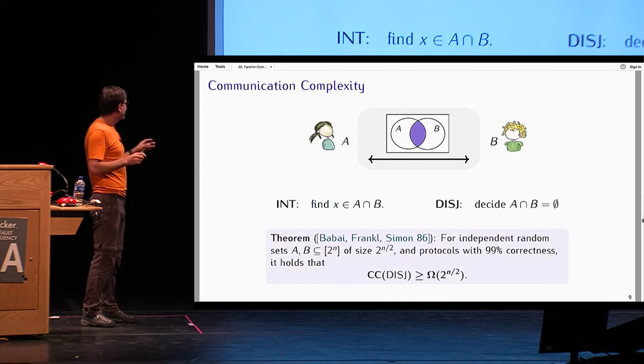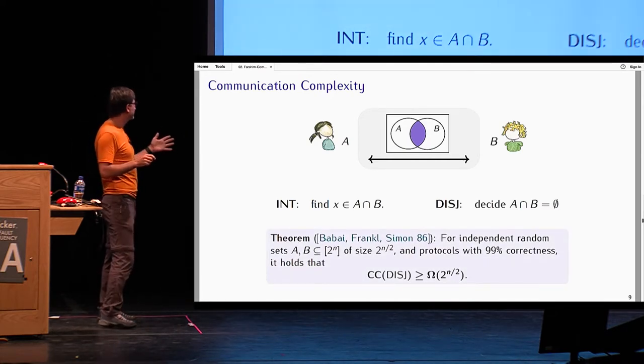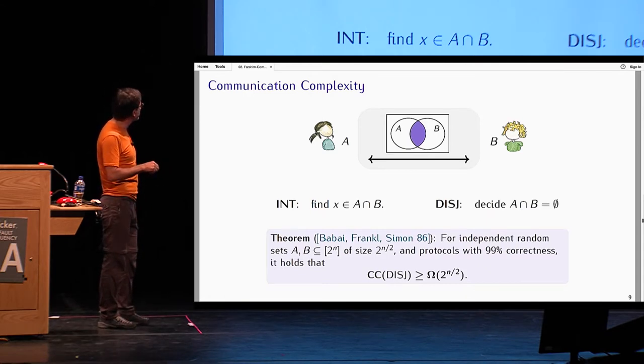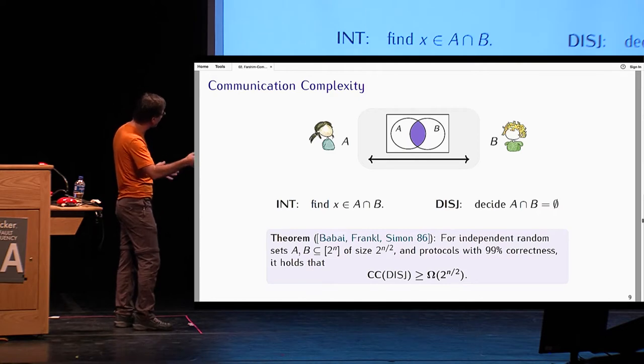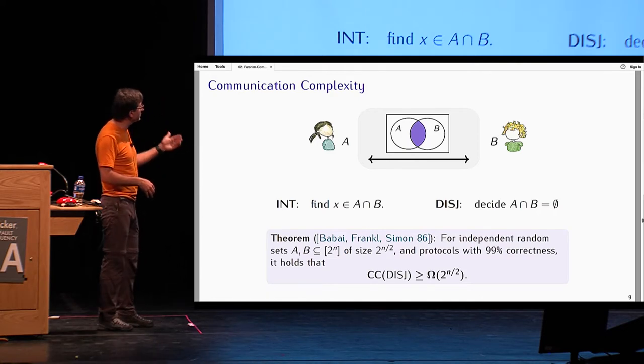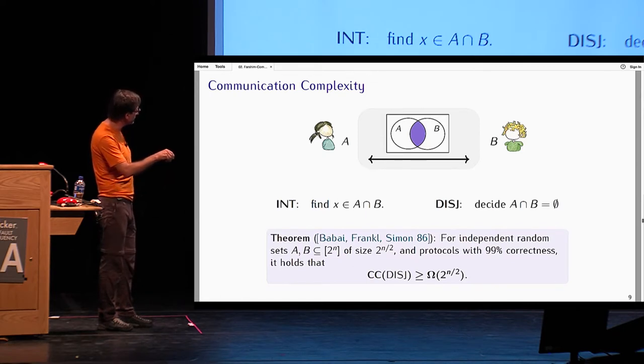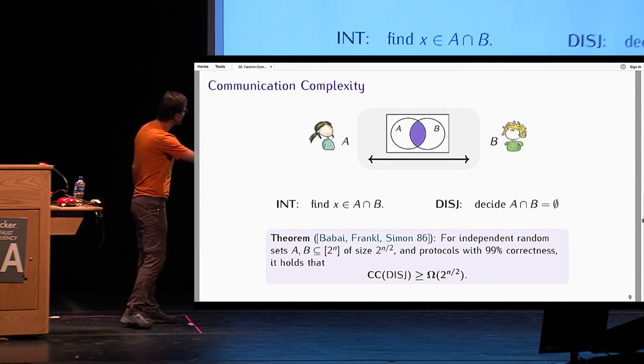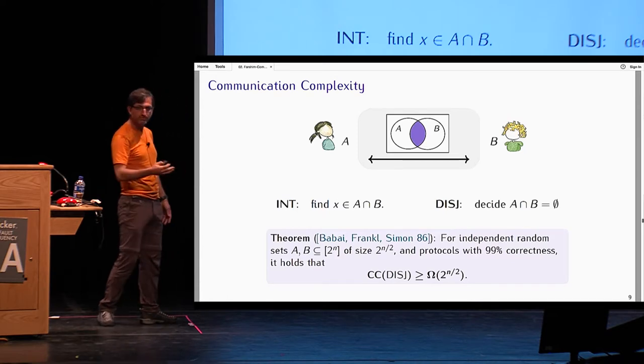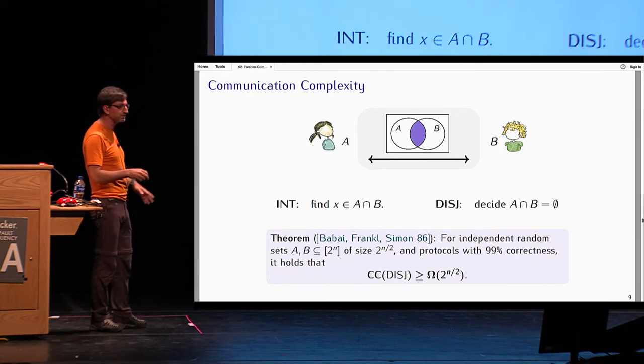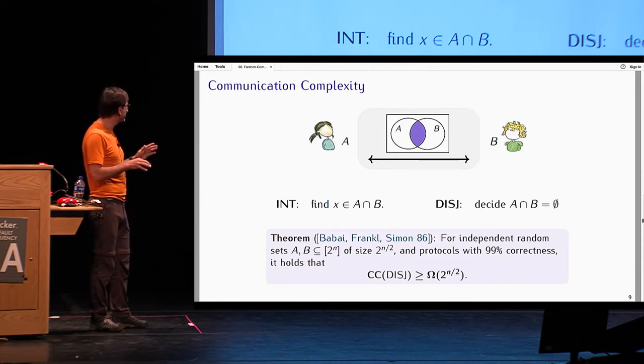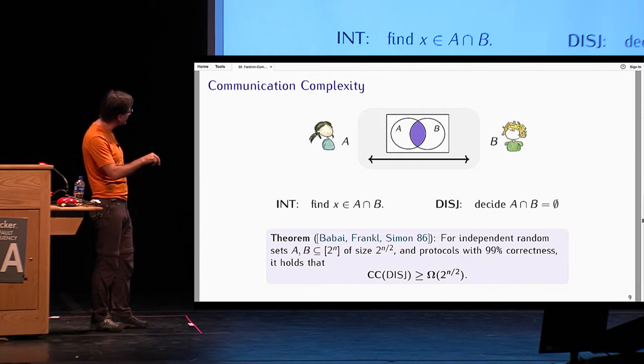This problem was studied in the 80s by Babai, Frankel, and Simon. They showed that for independent random sets A and B in subsets of a universe of size 2 to the N, of size 2 to the N over 2, and protocols which have 99% correctness, the communication complexity of the set disjointness problem is something like square root of 2 to the N, 2 to the N over 2. They need to exchange that many bits. What this basically means is that you essentially have to communicate the whole sets across. This is tight up to logarithmic factors.